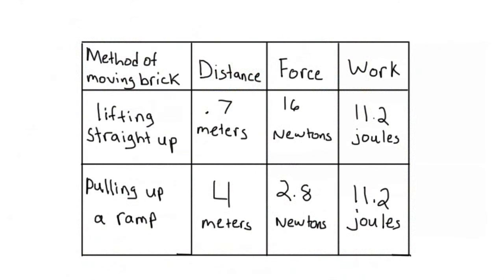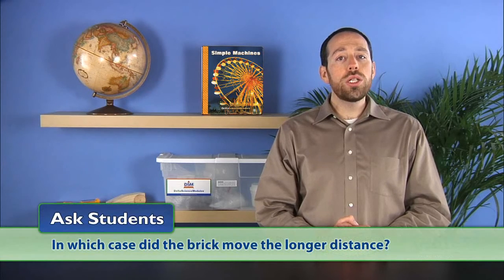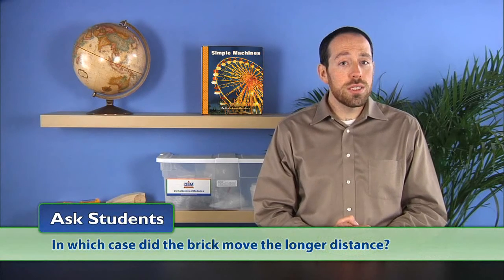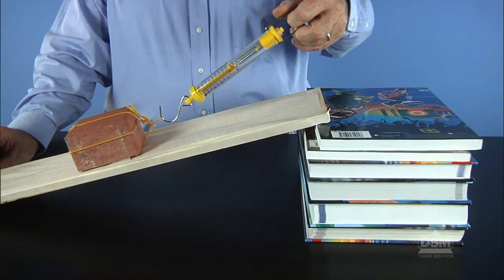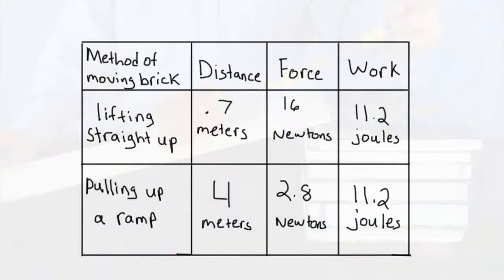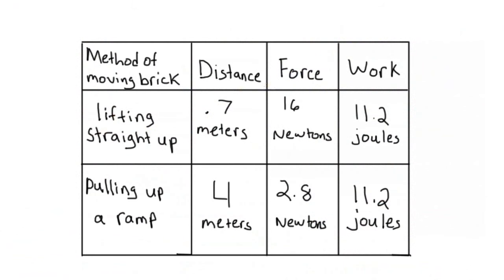Next, ask students what changed in each case. Students should reply that the distance the brick was moved and the force exerted changed. Then ask, in which case did the brick move the longer distance? Students should answer that the brick moved a longer distance when the brick was pulled up the inclined plane and a shorter distance when lifted straight up.